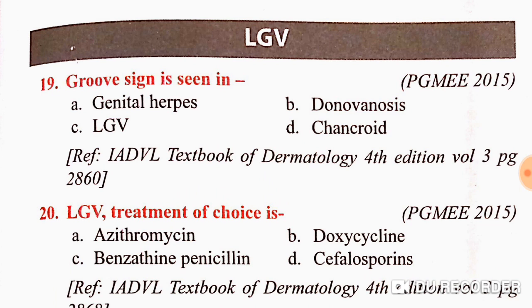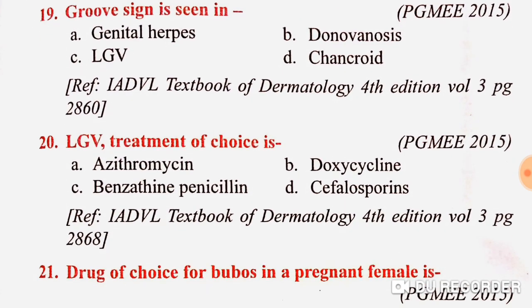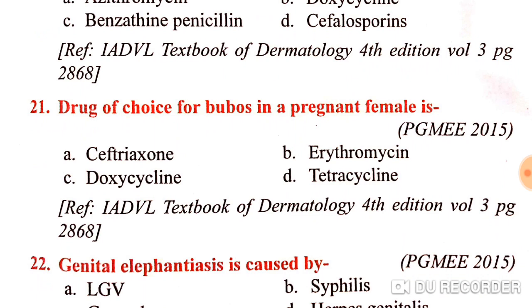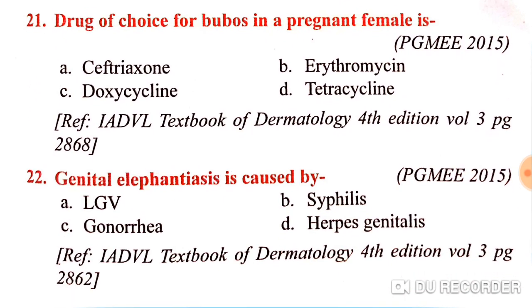To recap: groove sign is seen in LGV. LGV drug of choice is doxycycline. Drug of choice for buboes in a pregnant female is erythromycin — if the answer is not correct you can write in the comments. Genital elephantiasis is a complication of LGV, lymphogranuloma venereum.